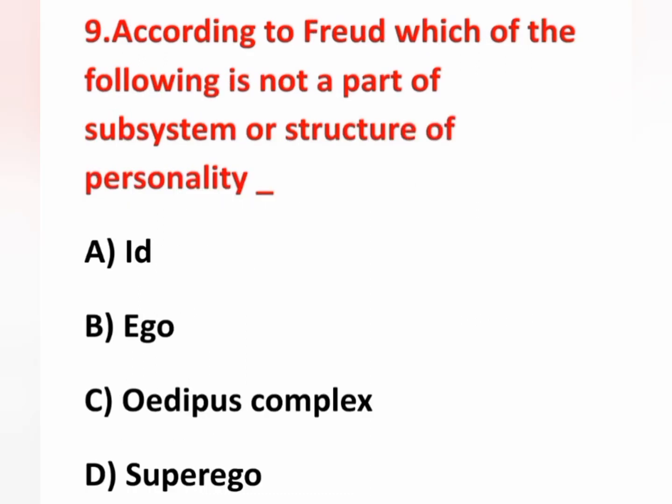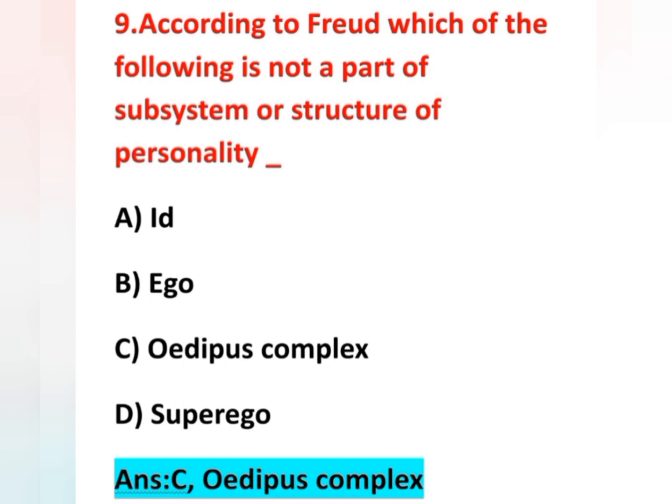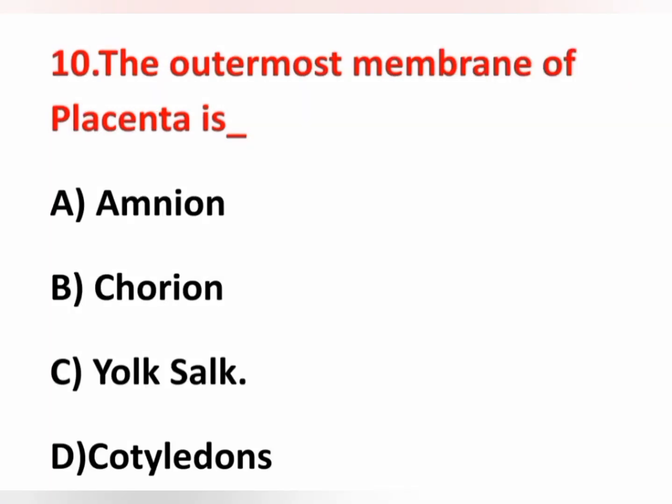Ninth question: According to Freud, which of the following is not a part of the subsystem or structure of personality? Option A id, option B ego, option C Oedipus complex, option D superego. The correct answer is option C — Oedipus complex. According to Freud, the three subsystems of personality are id, ego, and superego. The Oedipus complex is not included in the subsystem of personality.